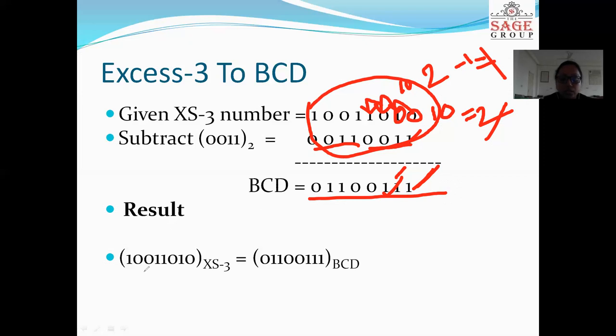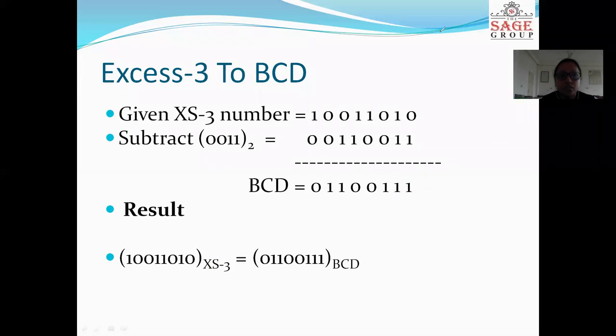So the result is 10011010 in XS3 code. When we convert XS3 code to BCD, we get 01100011. So this is the topic we discussed: how to convert BCD to XS3 code and XS3 code to BCD code. Thank you, students.